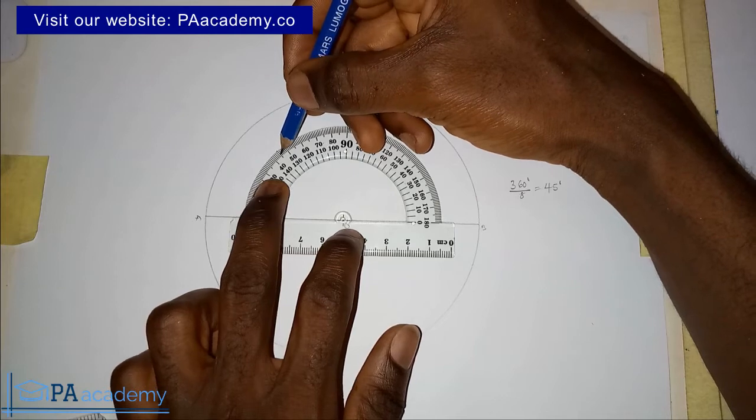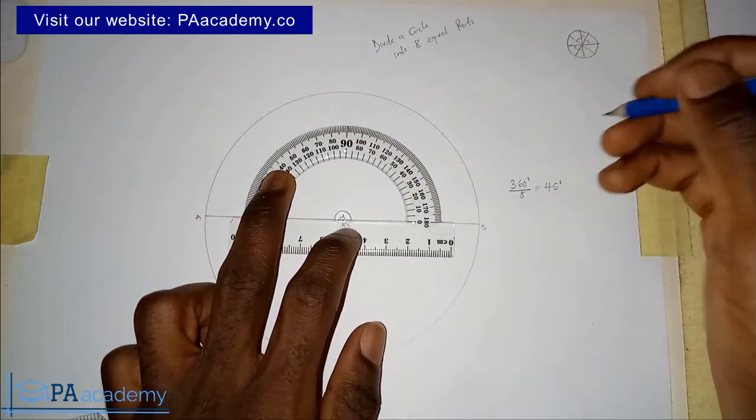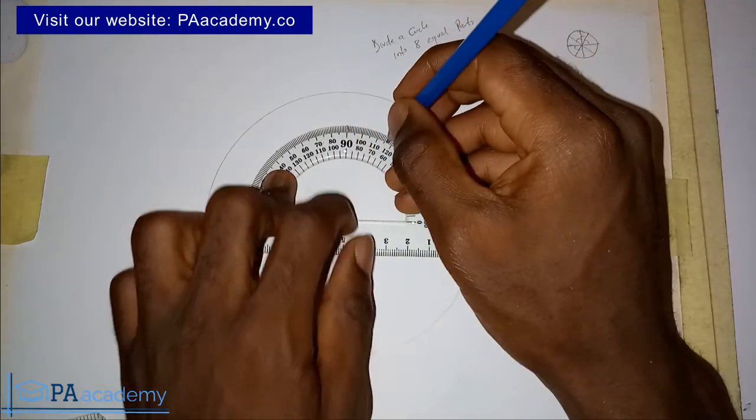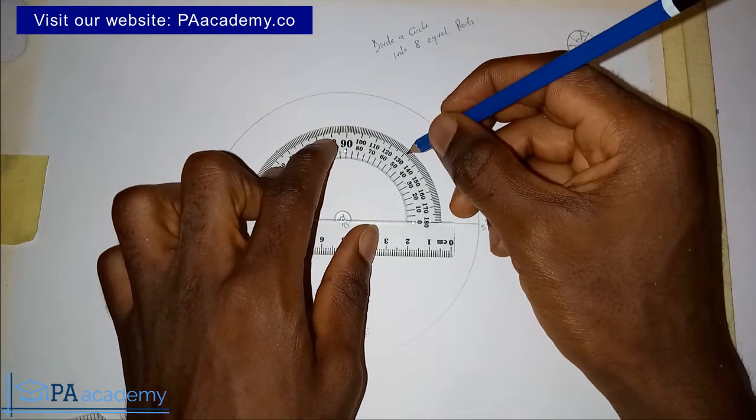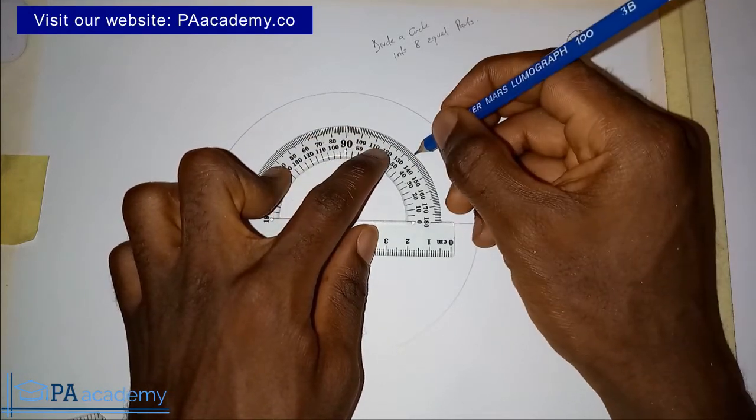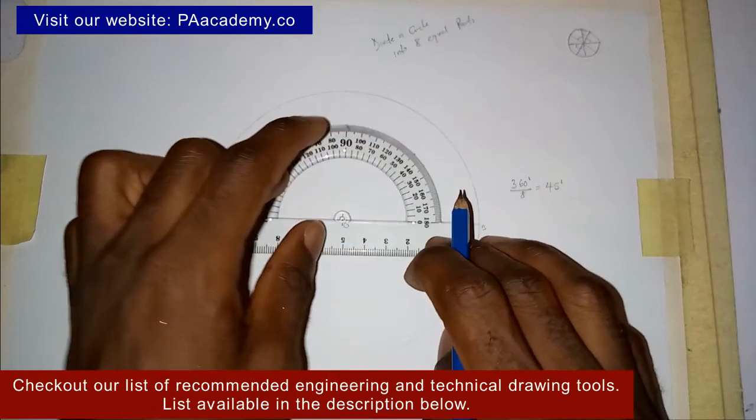So 45 degrees, plus another 45, plus another 45, that gives us 135. Then plus another 45, that gives us 180.